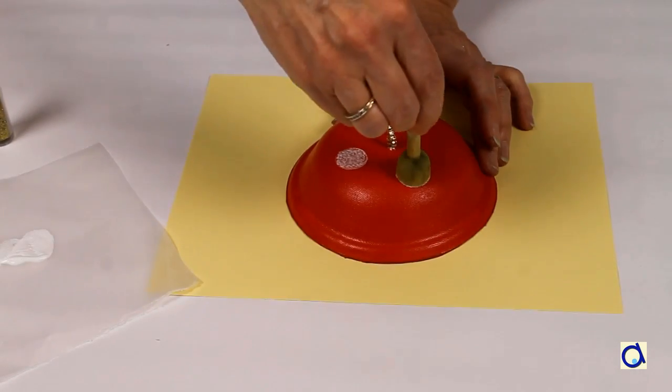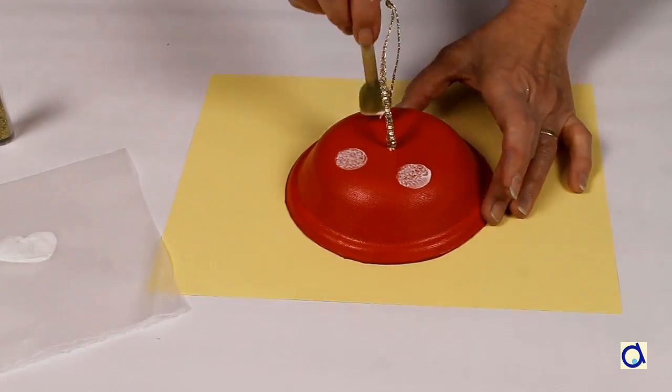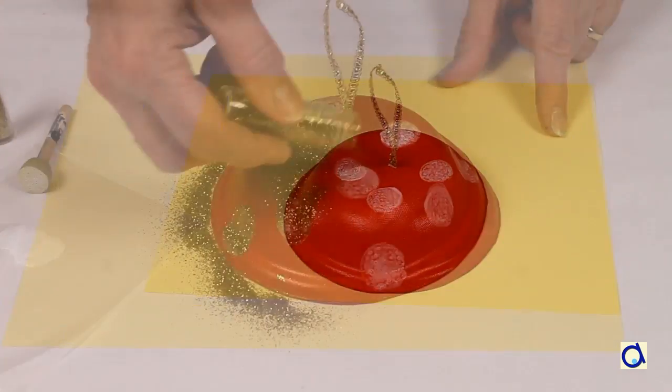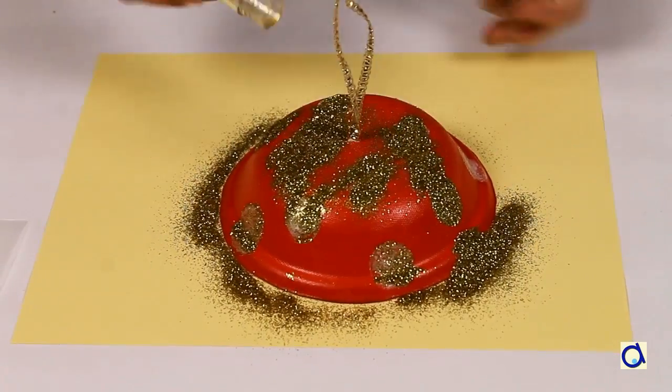Instead of white dots, put dots of glue and pour glitter on them. For this step, it's better to place the mushroom cap on a sheet of paper to easily recover the excess glitter that does not stay on the cap.